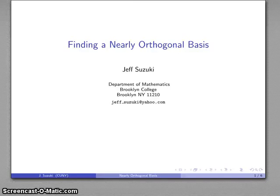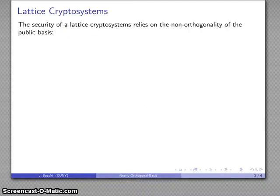Let's ask the question: can I find a reasonably orthogonal basis for a set of lattice basis vectors? The security of a lattice cryptographic system relies on the fact that the public basis is in general going to be non-orthogonal.